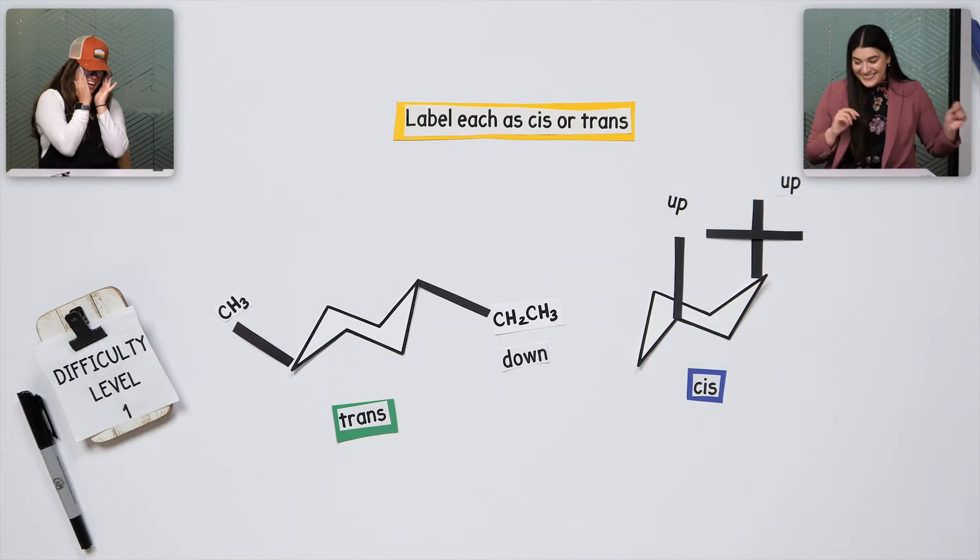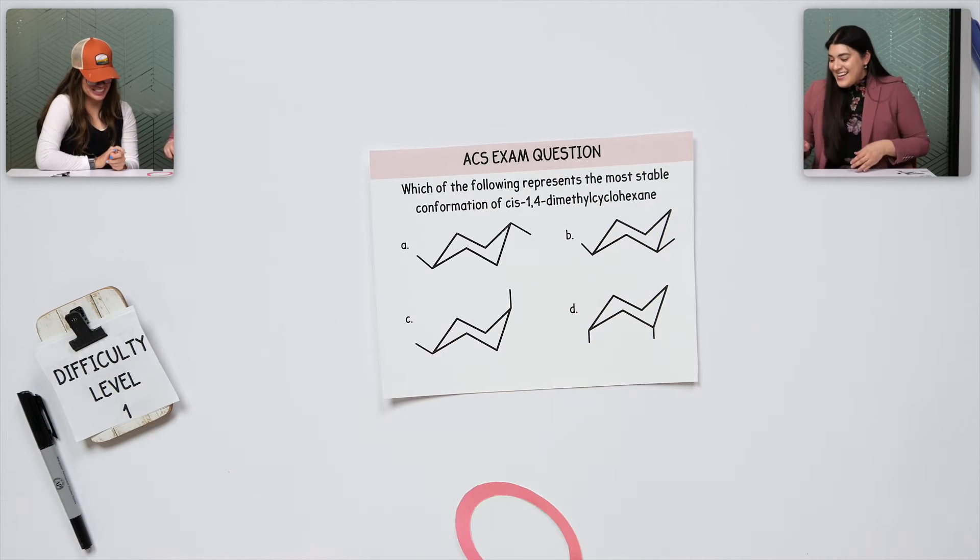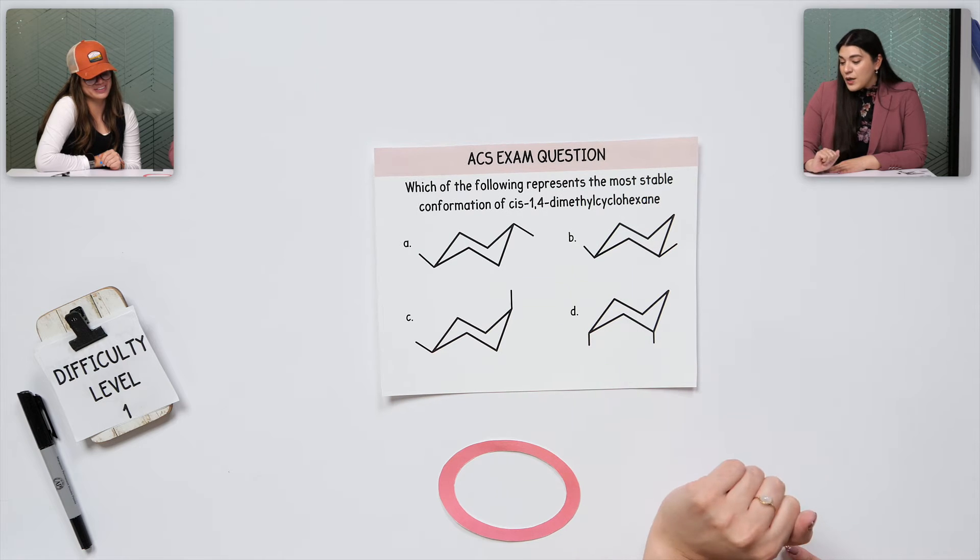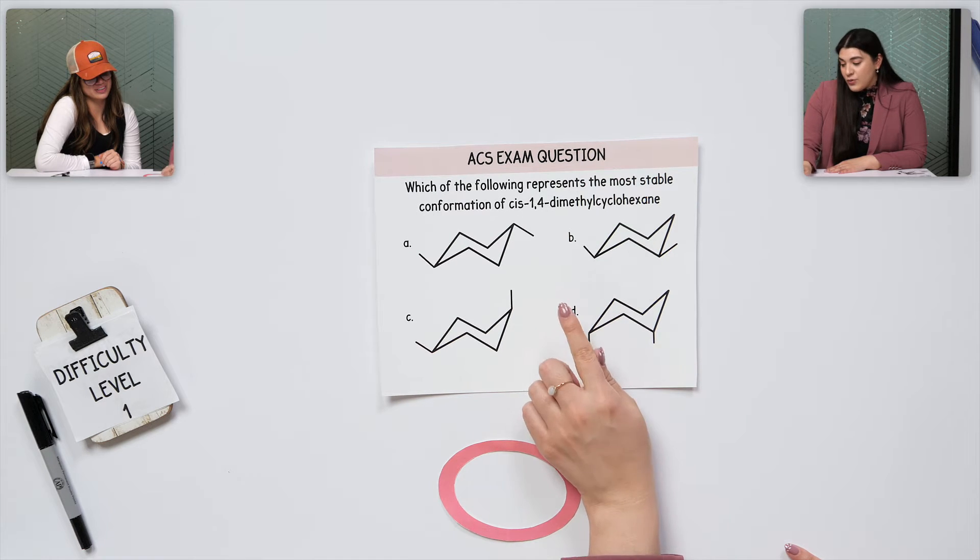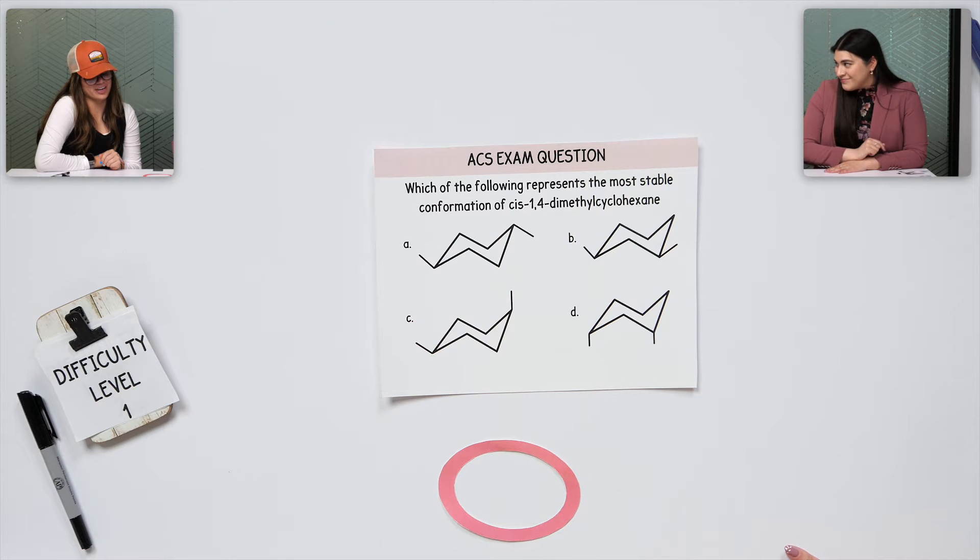Okay. Off to a good start. All right. So this next one, ACS. We love ACS. Yes, we do. We're going to pick one. So this one is saying, which of the following represents the most stable conformation of cis-1,4-dimethylcyclohexane? Okay.